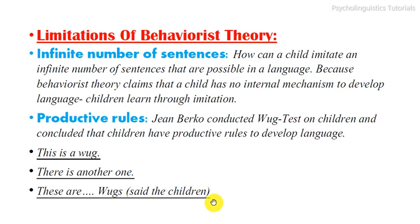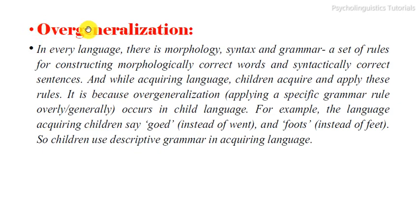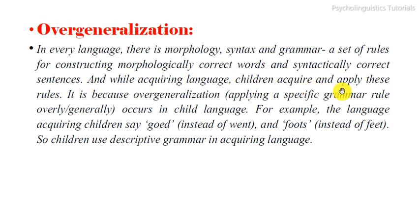Another limitation is overgeneralization. In every language there is morphology, syntax, and grammar — a set of rules for constructing morphologically correct words and syntactically correct sentences. While acquiring language, children acquire and apply these rules. Overgeneralization means applying a specific grammar rule too broadly.